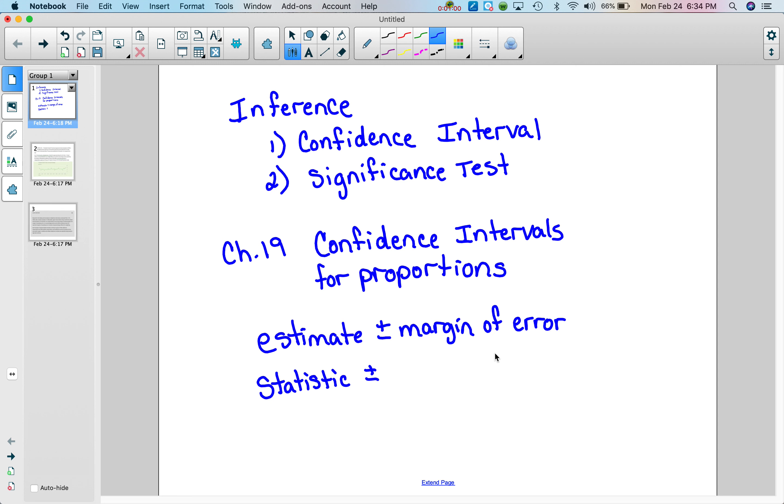This margin of error is made up of two parts: something called a critical value, and then we'll multiply that by the standard deviation of the statistic.